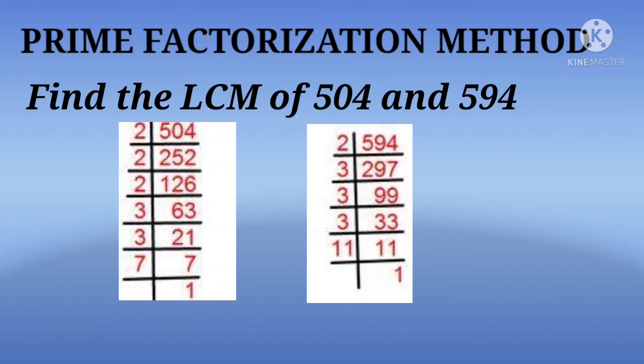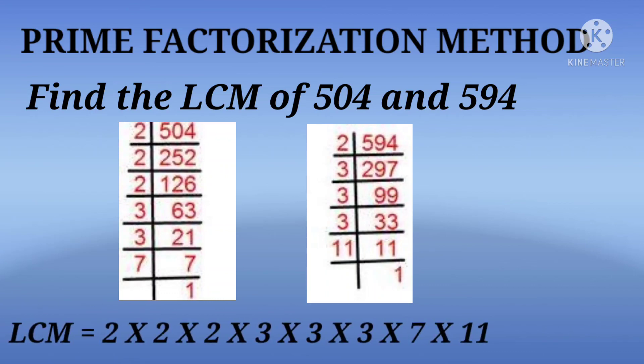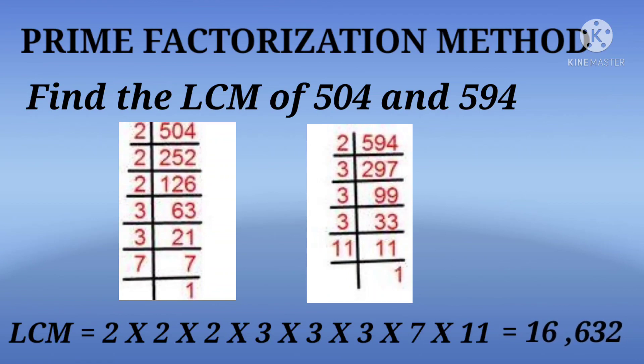So the LCM of 504 and 594 will be the product of 2 × 2 × 2 × 3 × 3 × 3 × 7 × 11. After multiplying them all, we get the product 16,632.